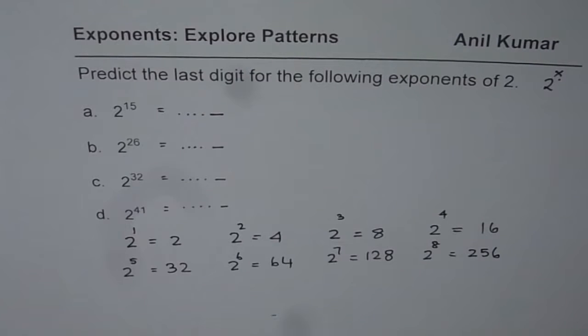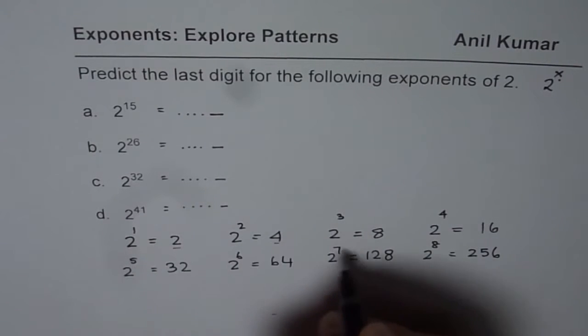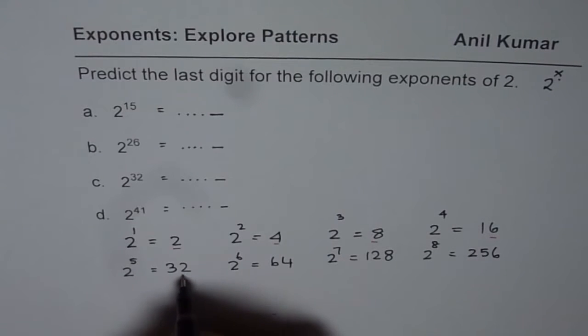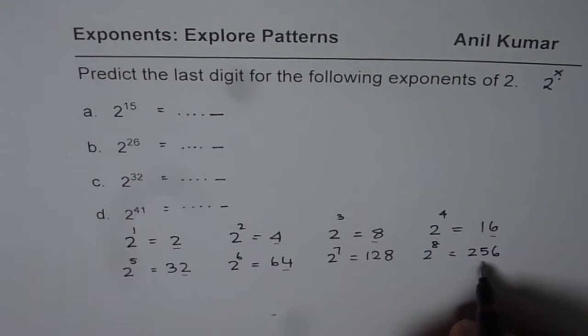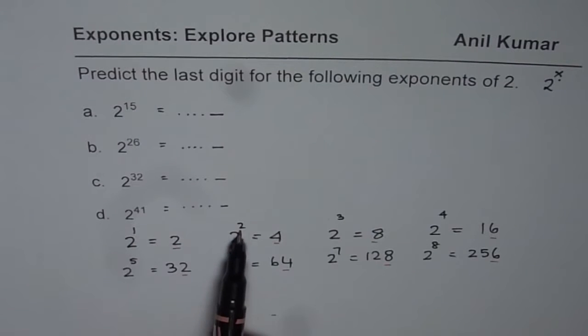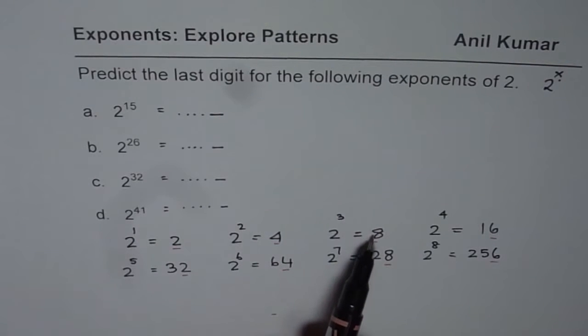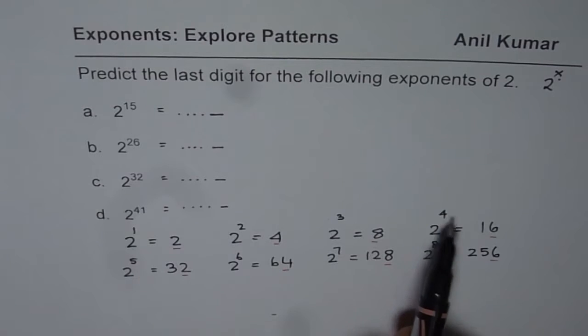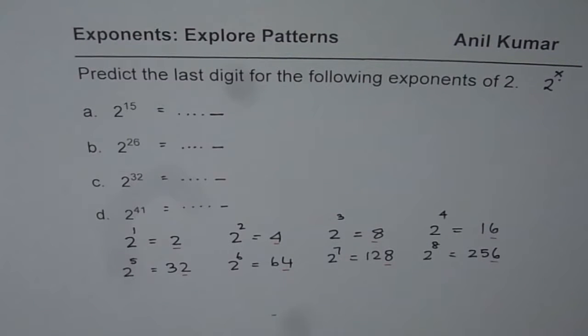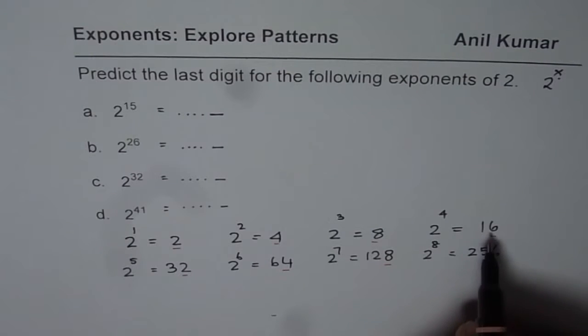Now you see there is a pattern. Clearly the 1's place is repeated after every 4th power. So if the power is a multiple of 4, it is 6. But when you divide by 4 and remainder is 1, then it is 2. If remainder is 2, it is 4. Remainder is 3, it's 8. But if there is no remainder, then it is 6.